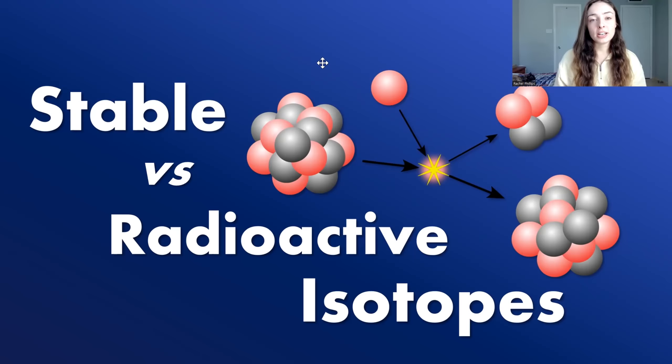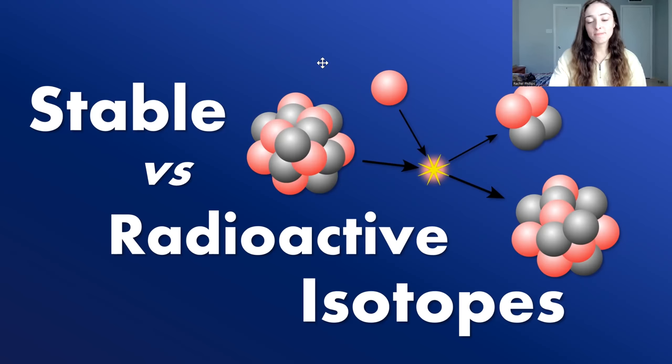You've probably heard of how we date rocks using isotopes, but there are actually different types of isotopes, and not all of them are good for dating — they can be good for other things. In this video, I'm going to talk about the difference between the two major types: stable isotopes and radioactive ones.